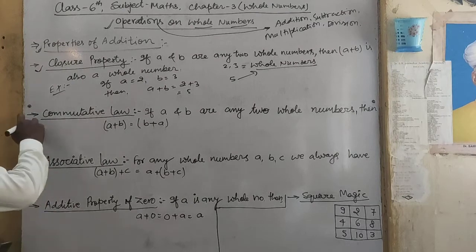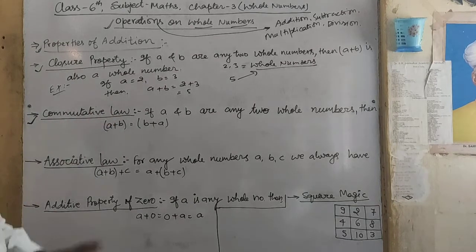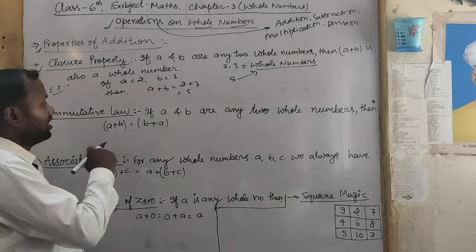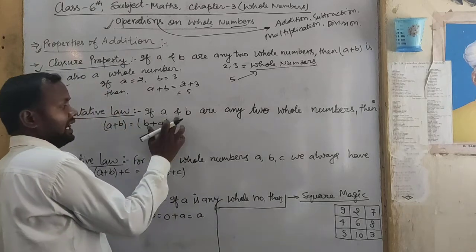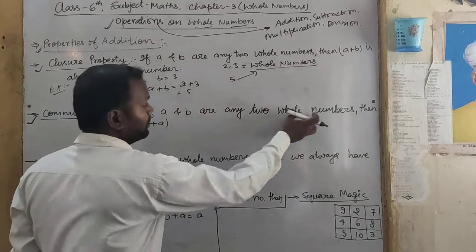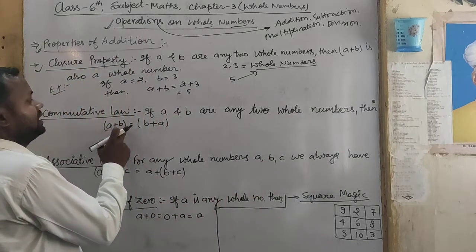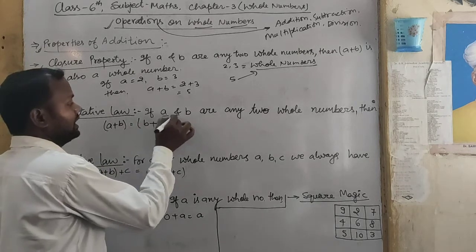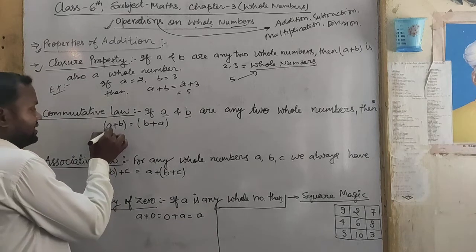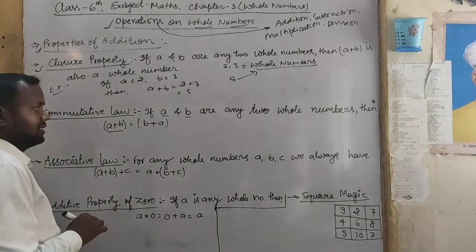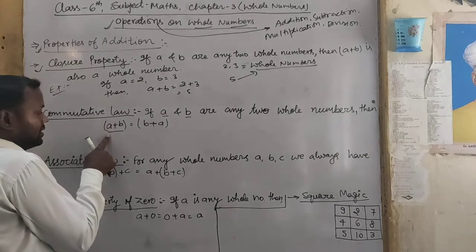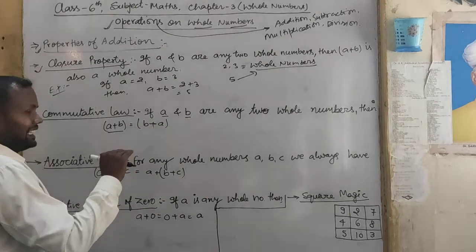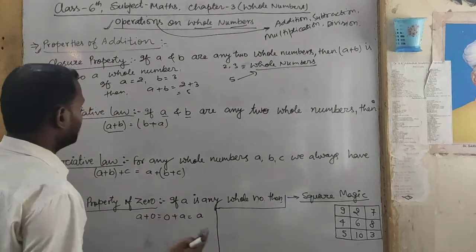Now come to the second property: Commutative Law. In Commutative Law, if A and B are any two whole numbers, then A plus B equals B plus A. It means if you have two whole numbers A and B, then A plus B — if we change the order — the result has no change.